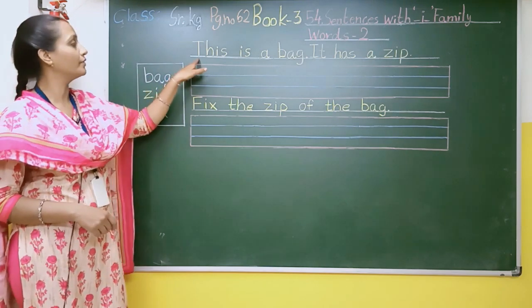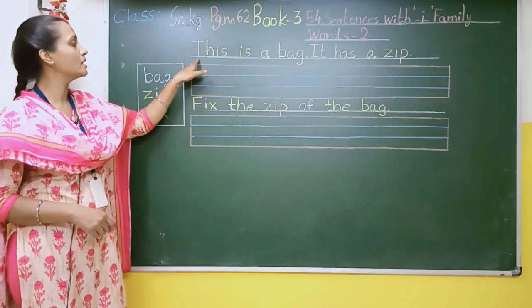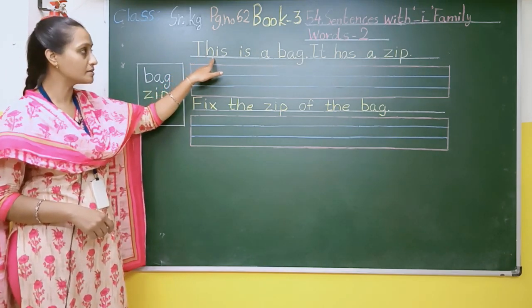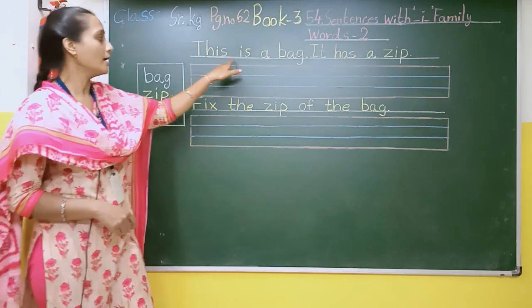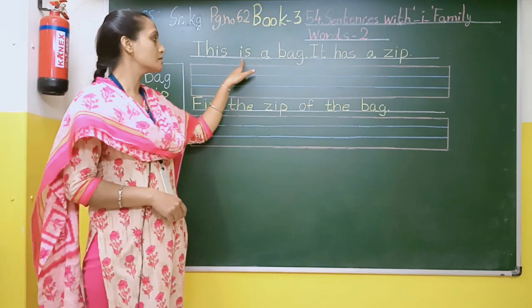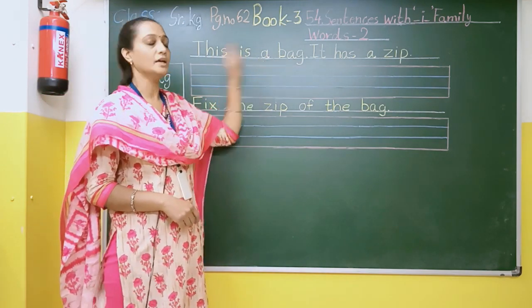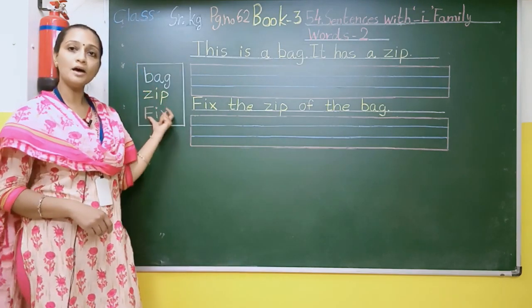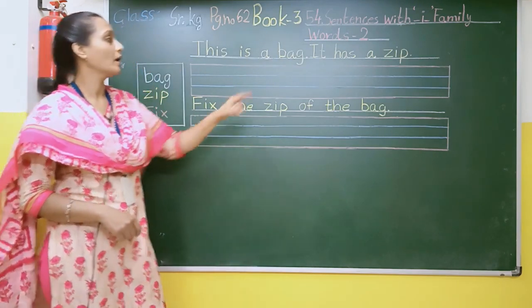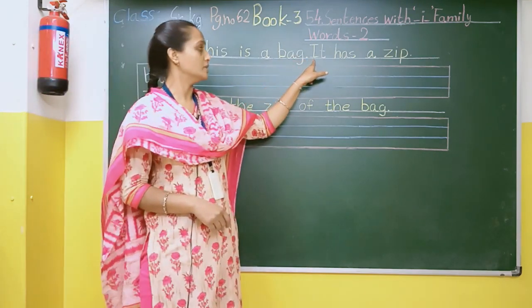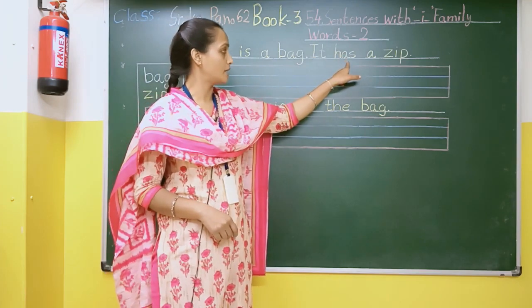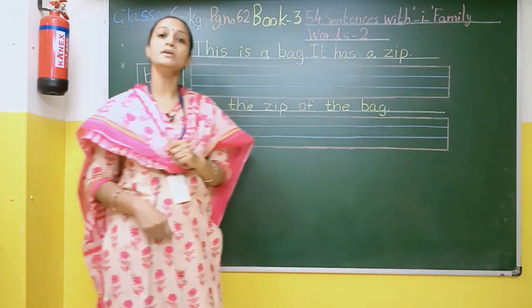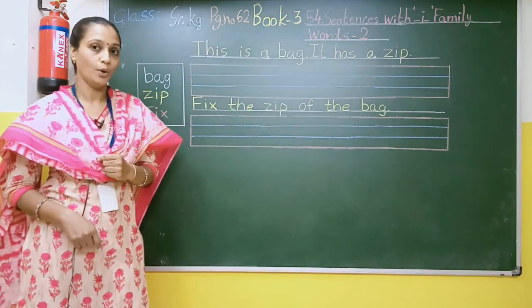Now I will read the sentence. T-H-I-S, this. I-S, is. A, B-A-G, bag. This is a bag. I-T H-A-S, it has, a Z-I-P, zip.